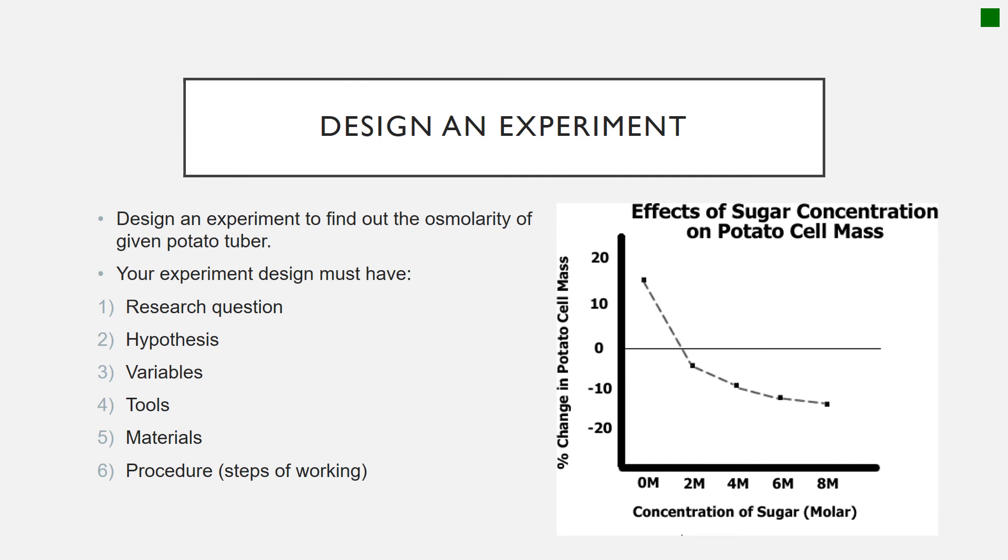Okay, to help you further, I have provided you with a diagram as the result of the experiment that has been done in the past to determine the concentration of cytoplasm or osmolarity of the potato tuber. So as you can see in this diagram, the potato is immersed in many different concentrations, molar, sugar molar, molarity. So it starts from 0 molar, 2 molar, up to 8 molar. And the other axis is talking about change in potato cell mass, the percentage of change.